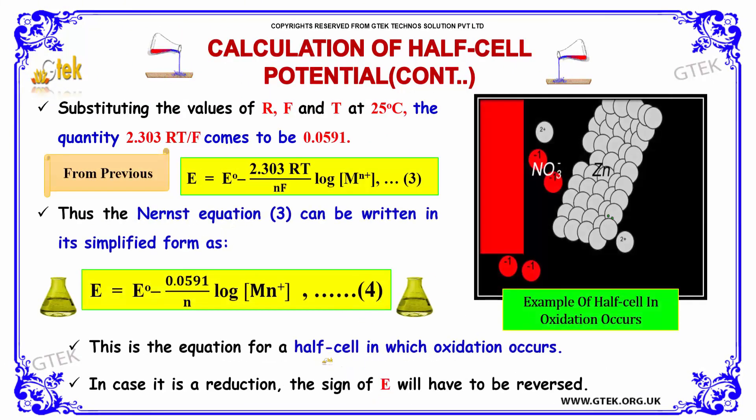Substituting the values of R, F, and T at 25°C, the quantity 2.303RT/F comes to be 0.0591. From the previous equation, this one,